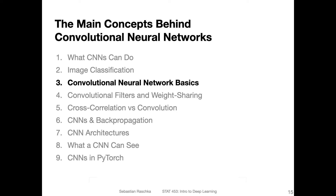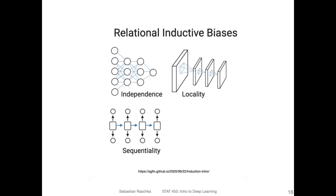Let's now talk about the basic concepts behind convolutional neural networks. I showed you this figure before — it's from an article you can find online. It's a very nice summary figure of the different assumptions that neural networks make. For instance, the multilayer perceptron assumes that the features are independent — that's the basic assumption behind the multilayer perceptron architecture.